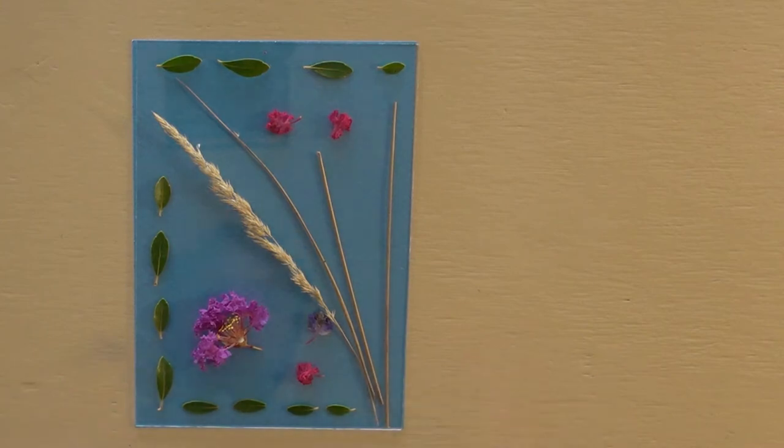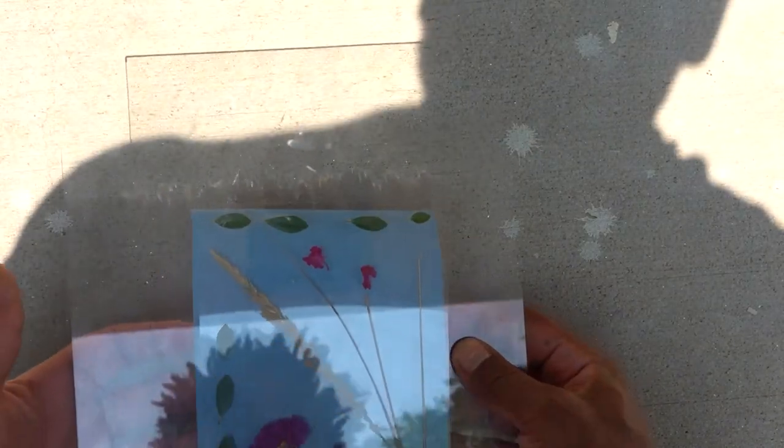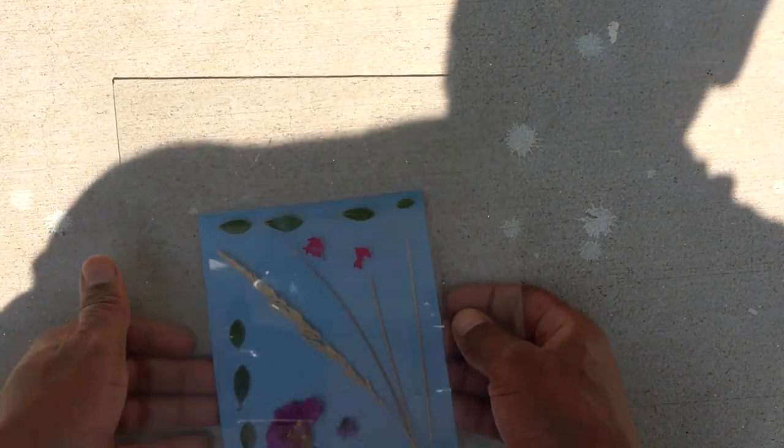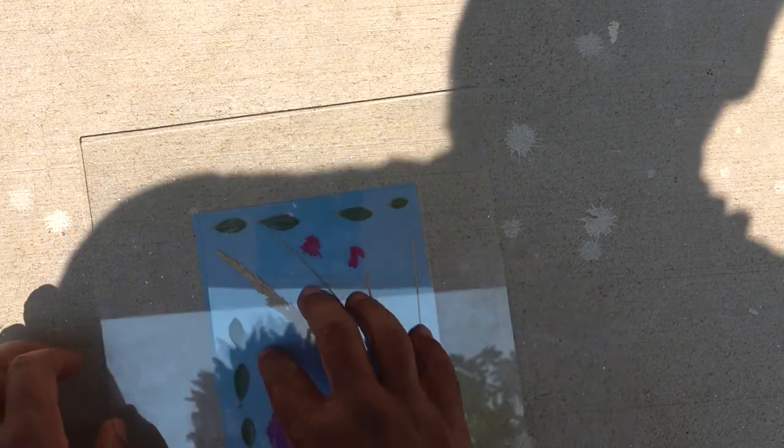Once you've composed your design, take it directly out into the sun and lay it on top of the cyanotype paper. Then take the other piece of plexiglass and sandwich the design in between both pieces, making sure that they're completely flat.